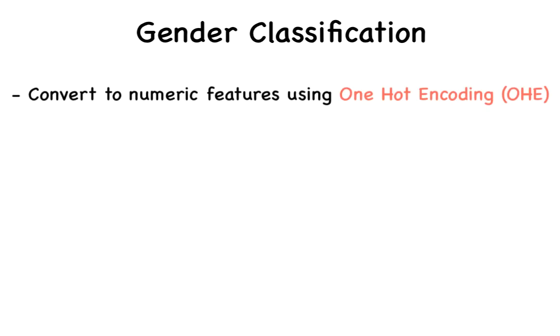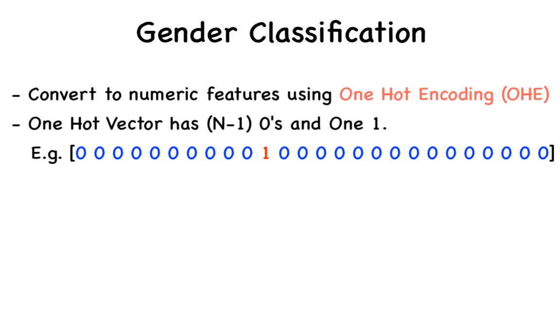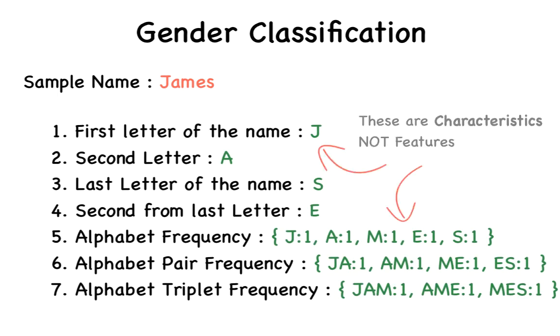For this conversion to numeric values, we will use one-hot encoding. Think of a one-hot vector as a vector of binary values where only one value is hot, or on, and the other values are cold, or off. Oh, by the way, a vector is a 1 cross n or an n cross 1 matrix. Let's convert James into a numeric representation, one characteristic at a time. I call these seven fields as characteristics and not features. Our task is to generate numeric features from these characteristics.